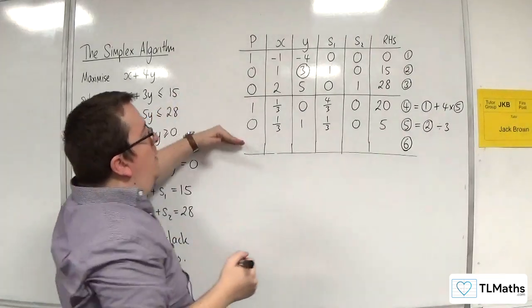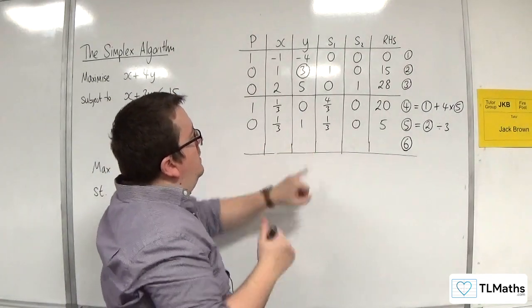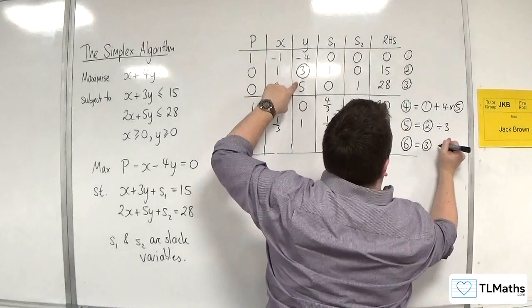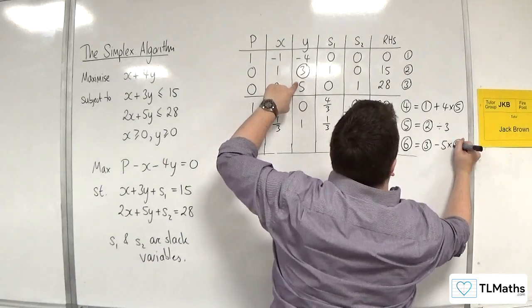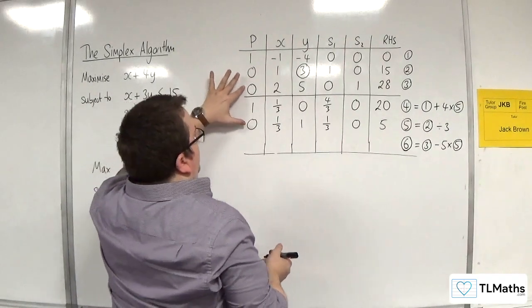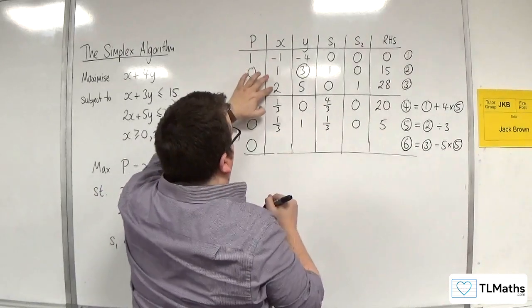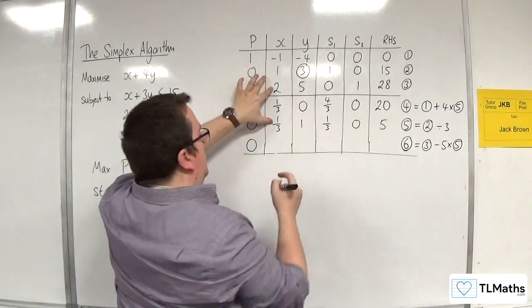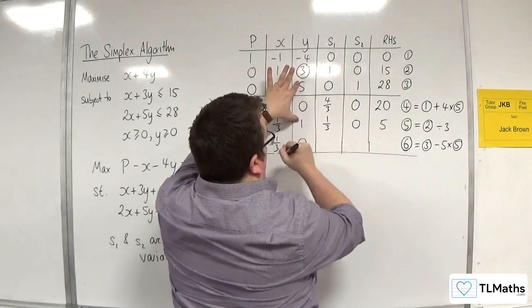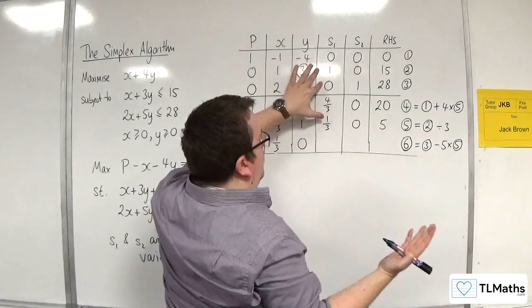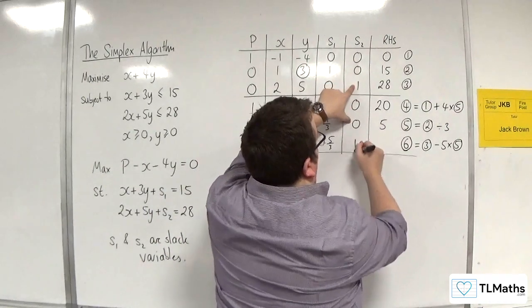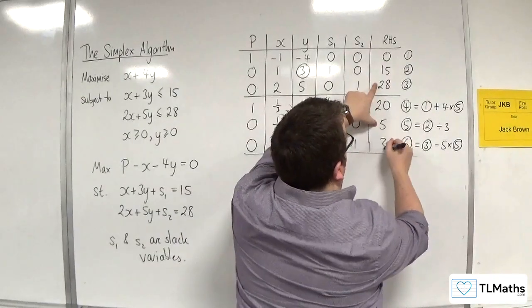Row 3 becomes row 6, but I need the y-column entry to be 0. I currently have 5 there, so I compute row 3 minus 5 times row 5: 0; 2 minus 5 thirds is one-third; 5 minus 5 lots of 1 is minus 5 thirds — wait, 5 minus 5 thirds is 10 thirds; 0 minus 0 is 0; 1 minus 0 is 1; and 28 minus 5 times 5 is 3.